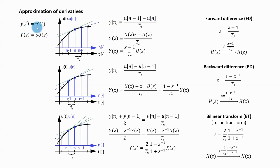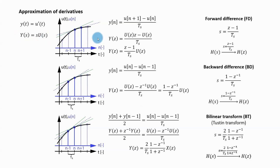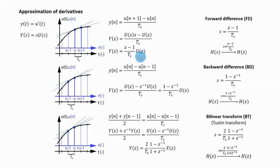One possibility is to approximate the derivative with the slope of the line passing through points at discrete times n and n+1. This approximation is called the forward difference. In the Laplace domain, the Laplace transform of the derivative gives multiplication by S. In the Z domain, the Z transform gives multiplication by (Z-1)/(T_s·Z), so to do the forward difference, substitute S = (Z-1)/(T_s·Z) in the transfer function.